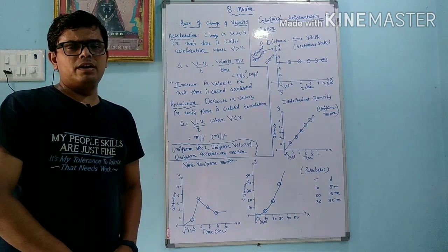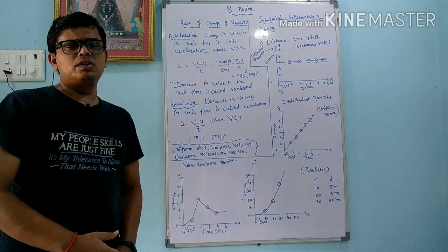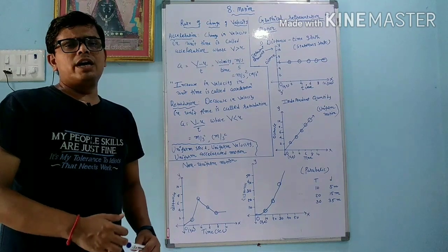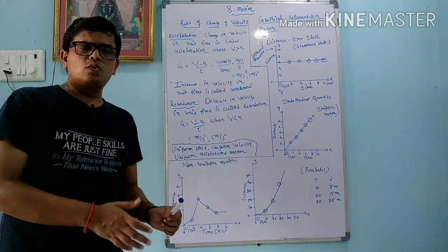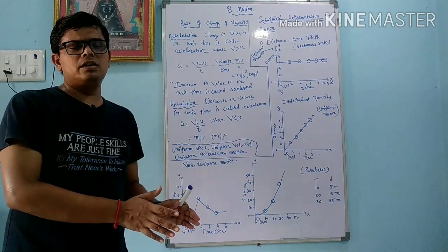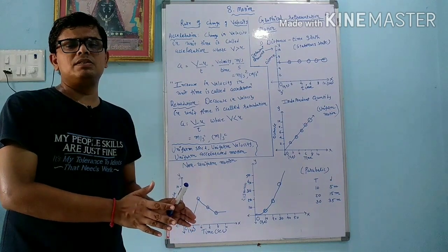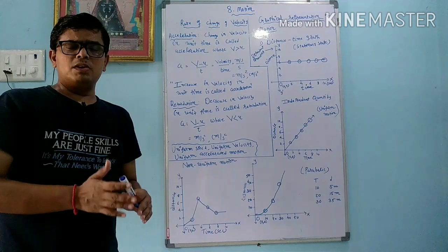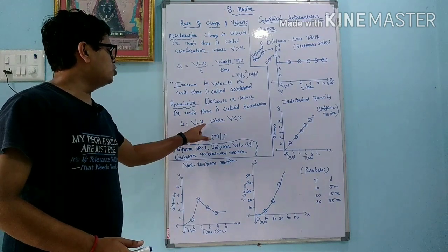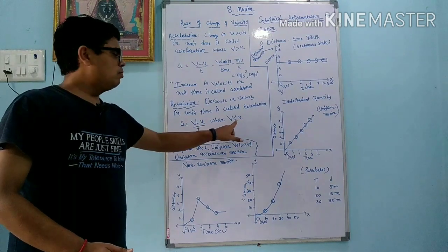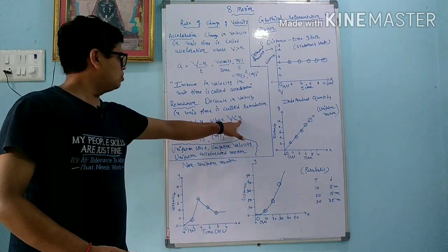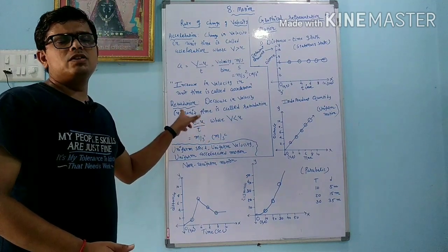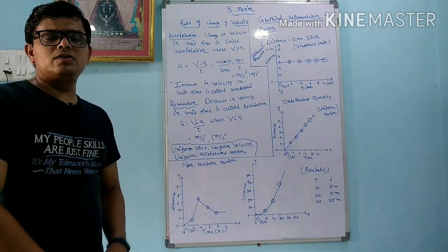Suppose I am traveling on my bike at an initial velocity of 30 kilometers per hour. I suddenly apply the brake due to some condition, and my vehicle comes to rest. My velocity becomes zero. So final velocity is zero and initial velocity is 30 km/hr. Therefore, a equals v minus u divided by t, which gives zero minus 30 divided by time — so the value of acceleration is negative. When the value of acceleration is negative, it is called retardation.